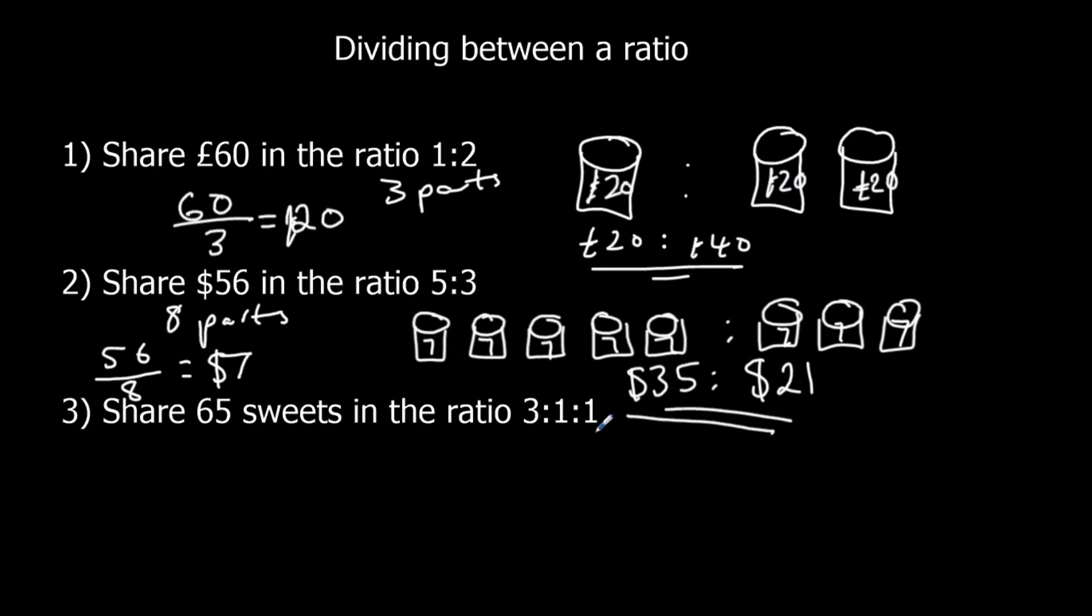And 65 sweets in the ratio of 3 to 1 to 1. That's 5 parts. I'm not going to draw the cups this time. I'm just going to go straight to 5 parts. And then 65 divided by 5 is 13. So 13 sweets is a part. Each part is 13. So I've got 3 times 13, 1 times 13, and 1 times 13. 3 thirteens are 39. 1 thirteen is 13. 1 thirteen is 13.